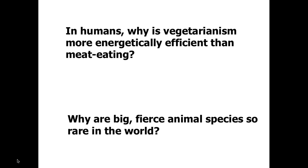Vegetarianism is more energetically efficient than eating meat because it lowers us to a lower position on the food pyramid, making more energy accessible when we consume plant matter rather than animal matter. If we eat a burger, the cow ate the initial plants and only 10% of the plant matter went into the cow — and now we're receiving only one-tenth of that, or one one-hundredth of the initial energy.